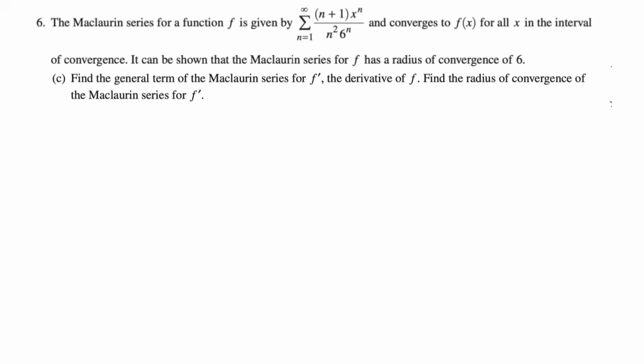Part (c): Find the general term of the Maclaurin series for f', the derivative of f, which means we just need to use the power rule on the nth term of f. And then find the radius of convergence of the Maclaurin series for f'. So just the radius of convergence and just the general term. We don't need some number of non-zero terms or anything like that. For our general term, the only variable in the general term of f is x, and it's x^n. So the derivative of x^n is n times x^(n-1).